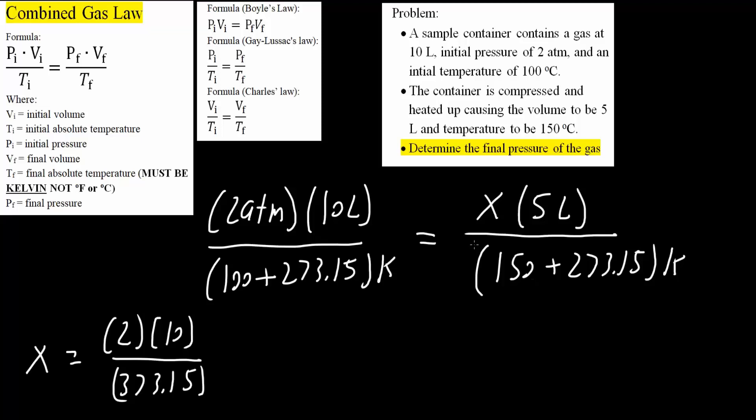This piece right here is now going to the numerator. We would get 150 plus 273.15.